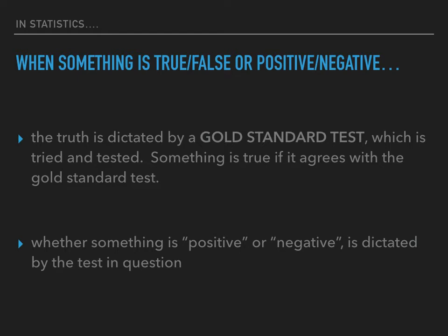The truth is dictated by a gold standard test, which is tried and tested. Something is true if it agrees with the gold standard. If something is positive according to a new test and also positive according to the gold standard, then it is truly positive. If something is negative via a new diagnostic test and also negative from the gold standard, then it is truly negative.